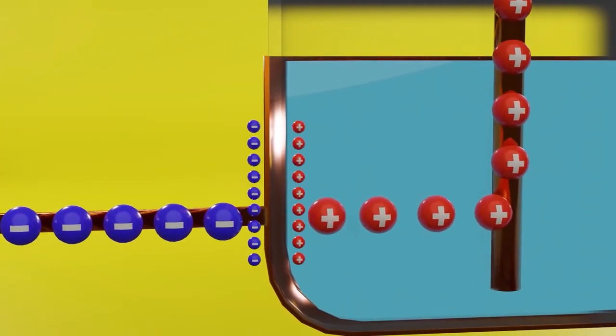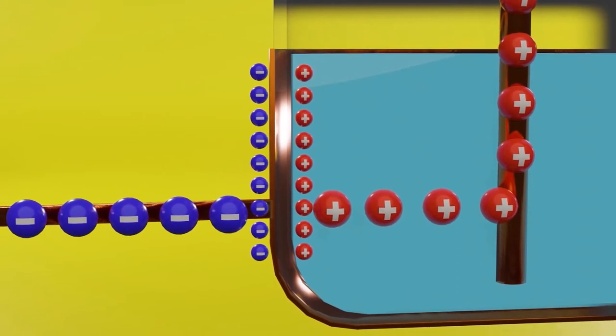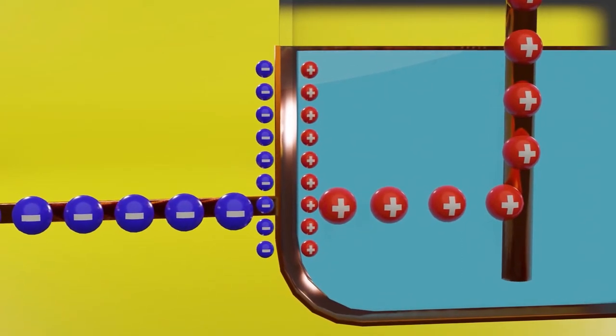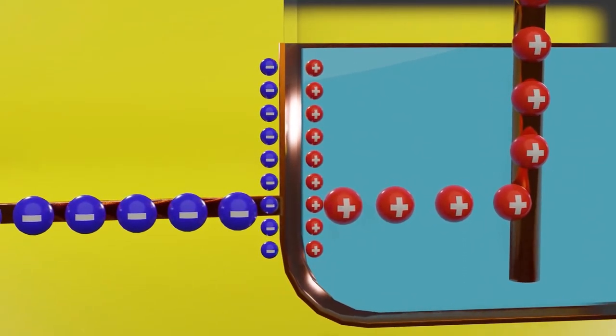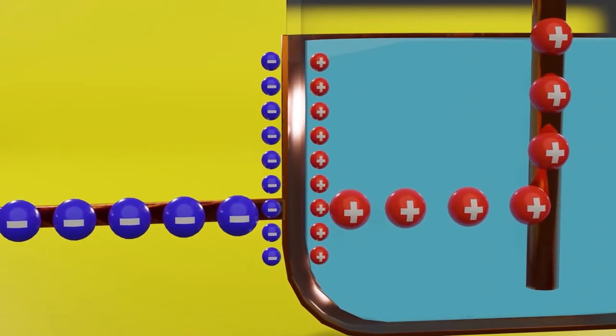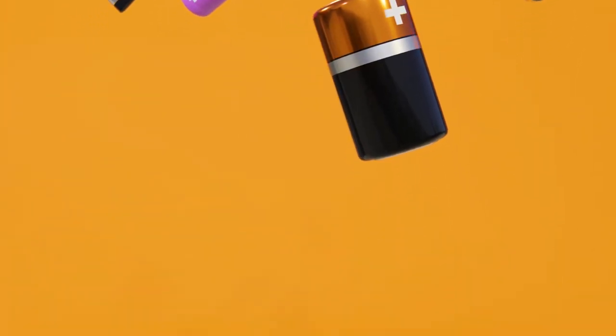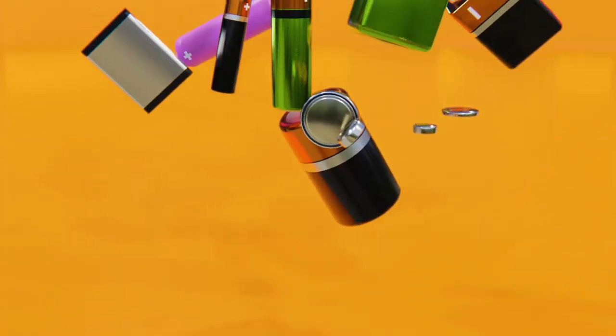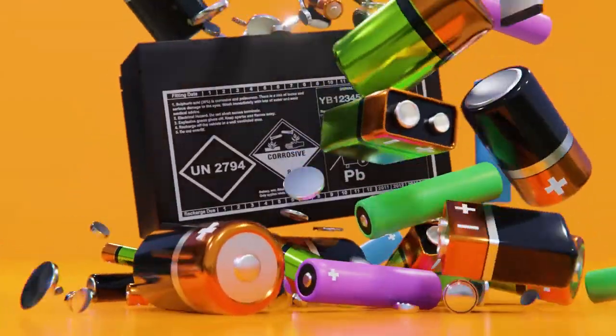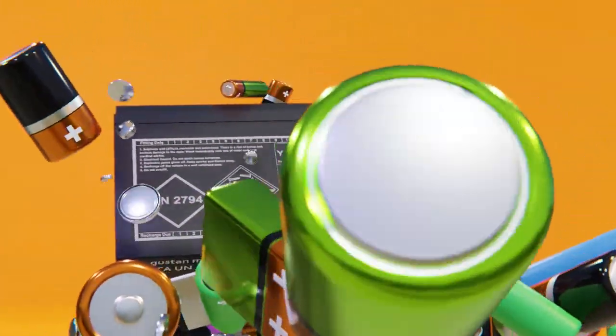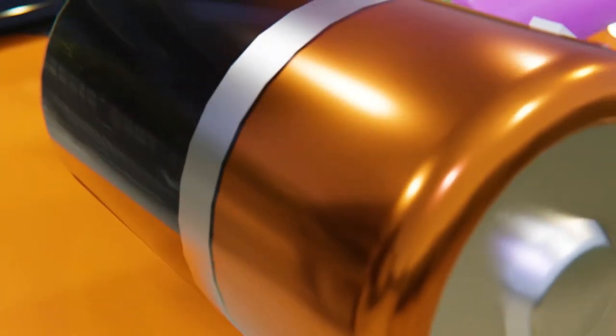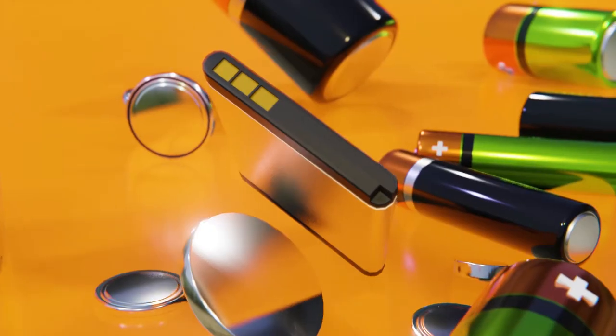There are many types of batteries if we classify them according to the chemical elements that compose them and the reactions that occur within them, although in general terms we could separate them into two broad categories: primary or non-rechargeable batteries, and secondary or rechargeable batteries.